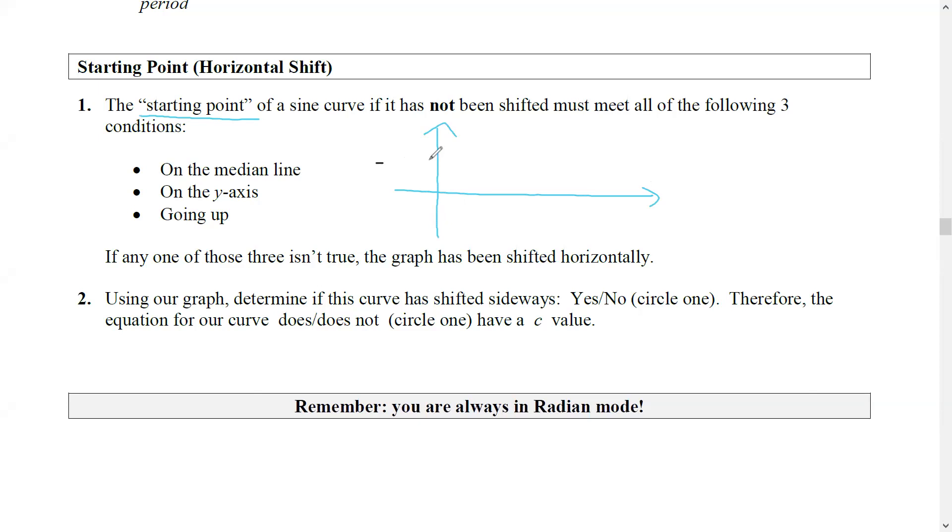We started at the bottom and we went up like that, right? So what I say to myself is: am I on the median line on the y-axis going up? No, that was not there. The median line is right there where it's crossing the median line. This thing started at a minimum, so has this thing been shifted? Answer: yes.